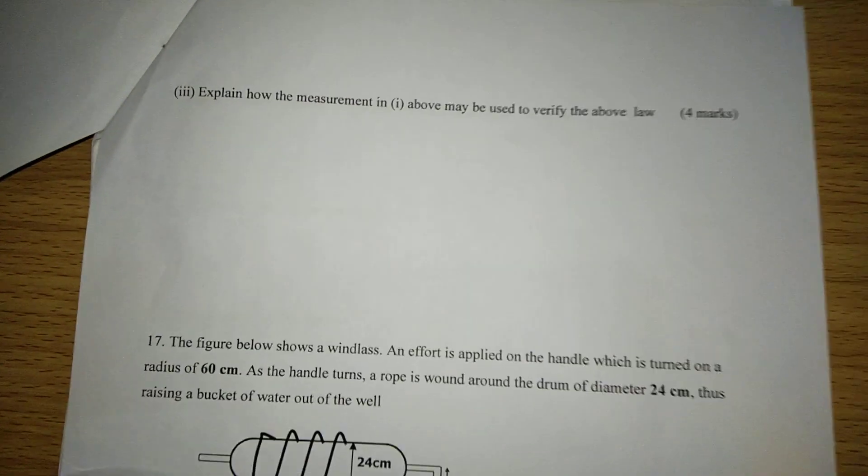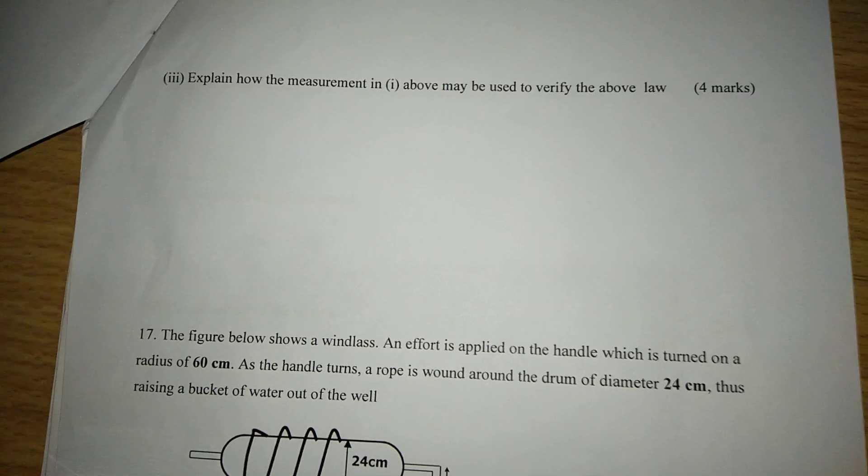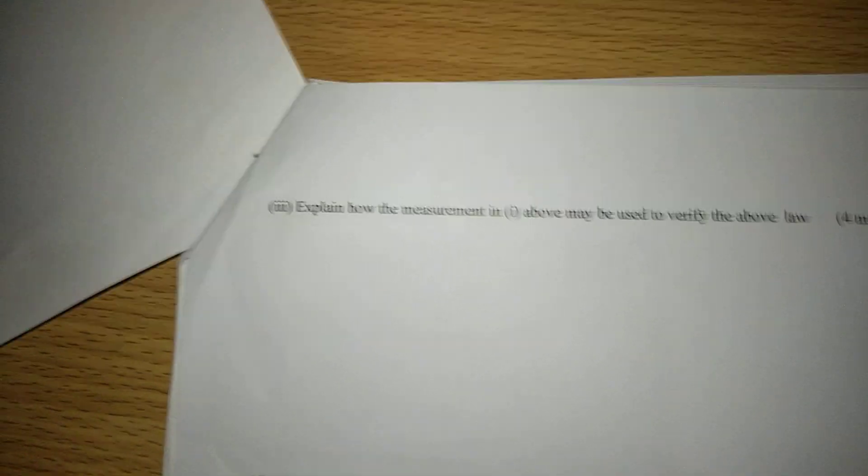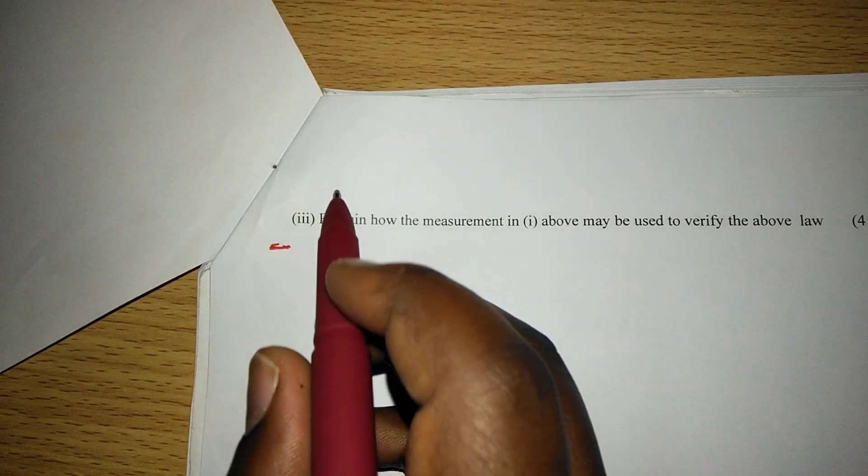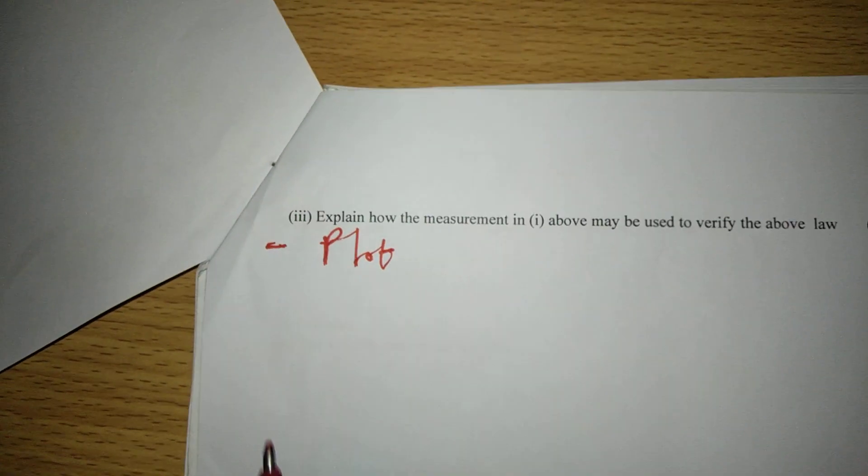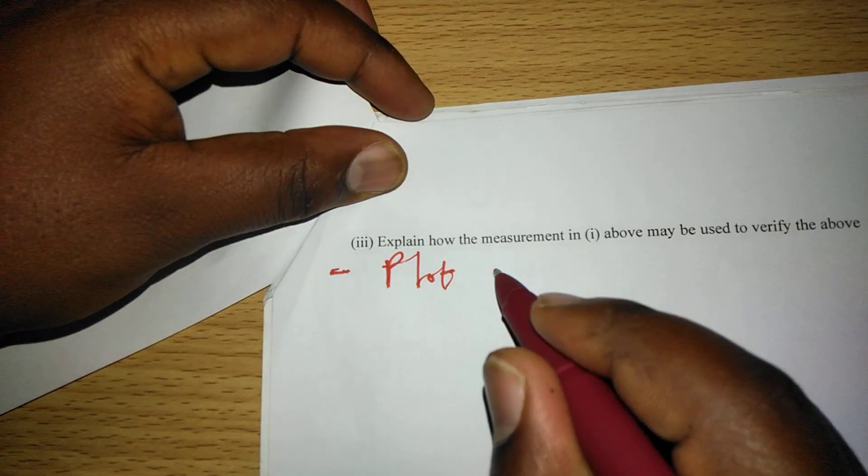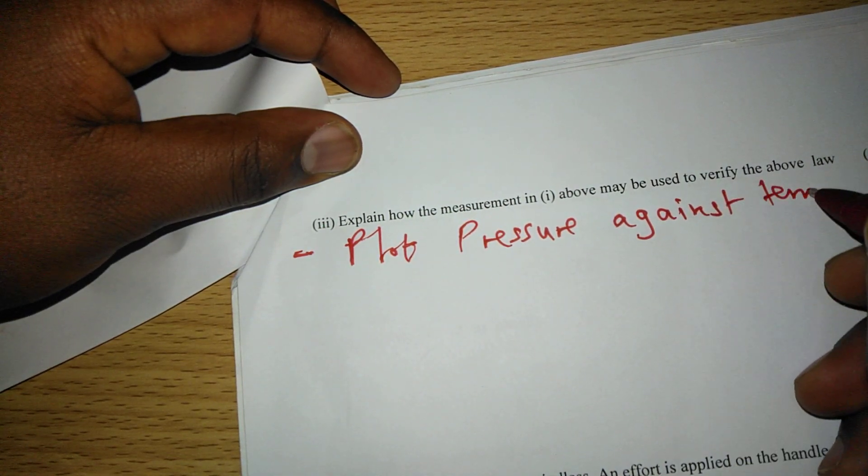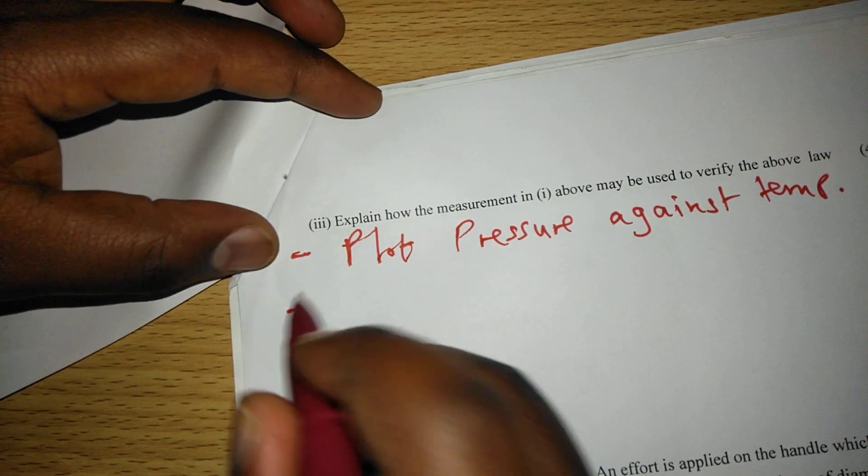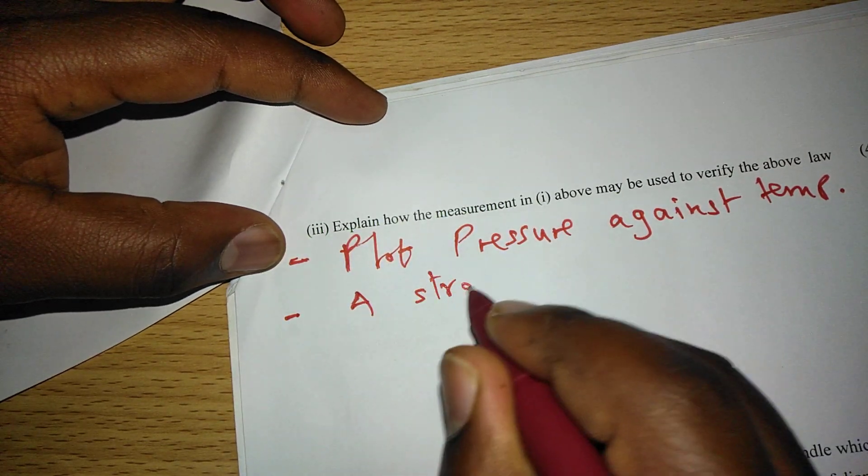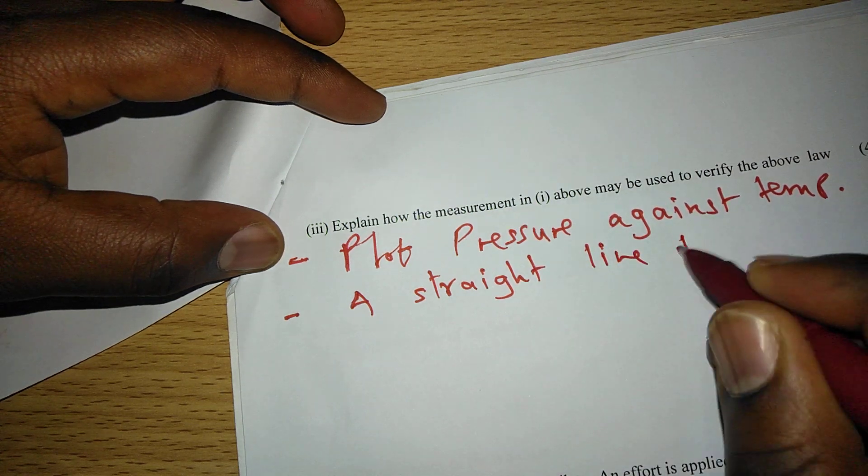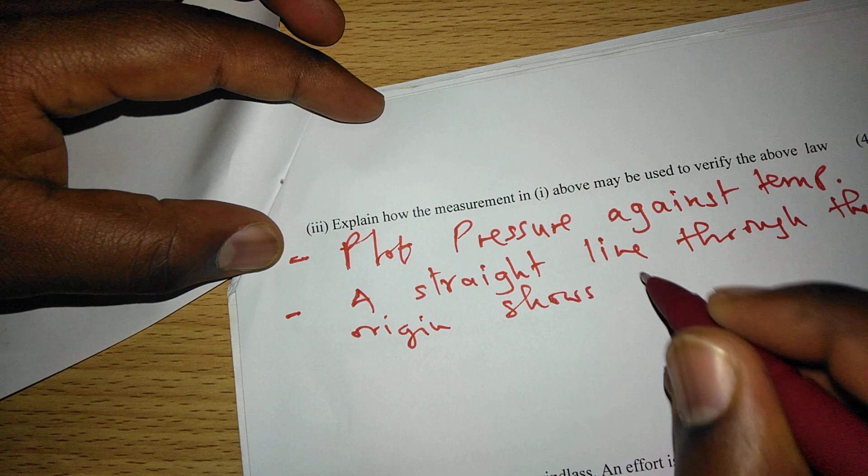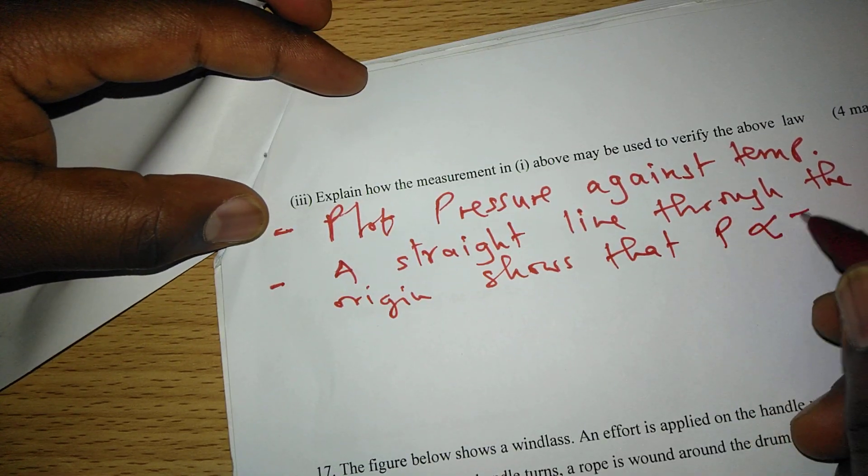Explain how the measurement in one above may be used to verify the law. So how can temperature, which has been recorded against pressure, be used to verify the pressure law? So what we do here is we plot pressure against temperature. When pressure is plotted against temperature, if we get a straight line through the origin, this shows that pressure is directly proportional to temperature.